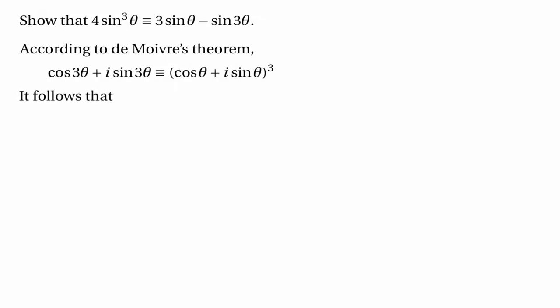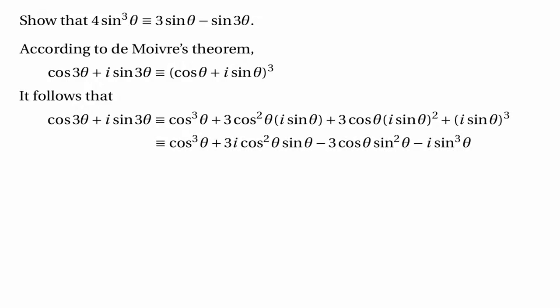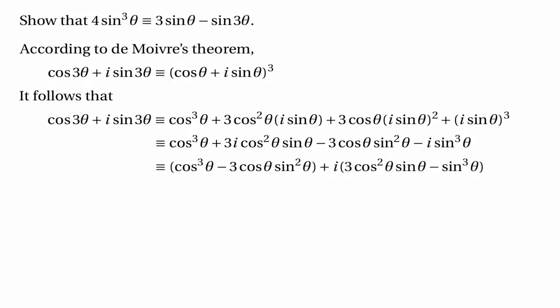Multiplying out those brackets using the binomial theorem, we get cos³θ plus 3 cos²θ (i sin θ) plus 3 cos θ (i sin θ)² plus (i sin θ)³, which simplifies to cos³θ plus 3i cos²θ sin θ minus 3 cos θ sin²θ minus i sin³θ. Writing this in terms of its real and imaginary components, the real part is cos³θ minus 3 cos θ sin²θ, and the imaginary part is 3 cos²θ sin θ minus sin³θ.